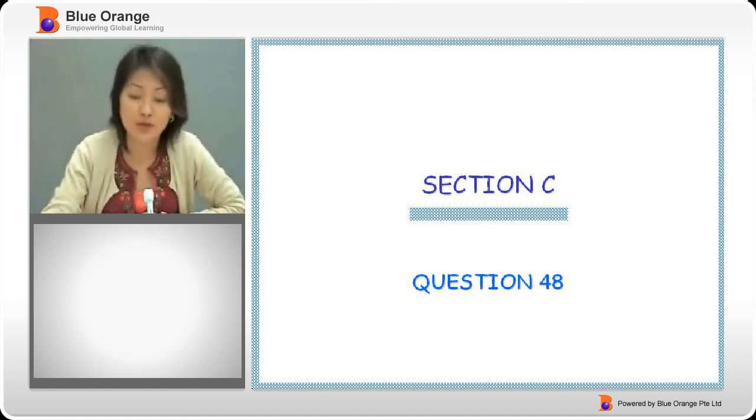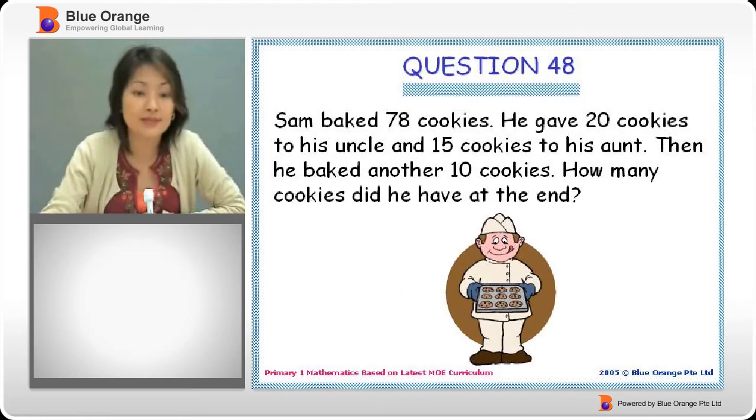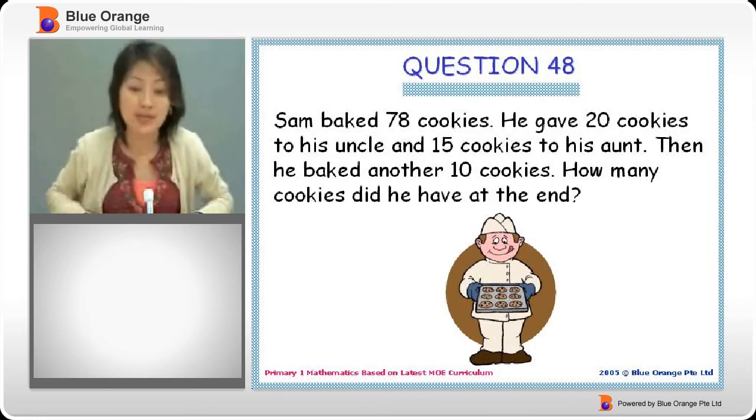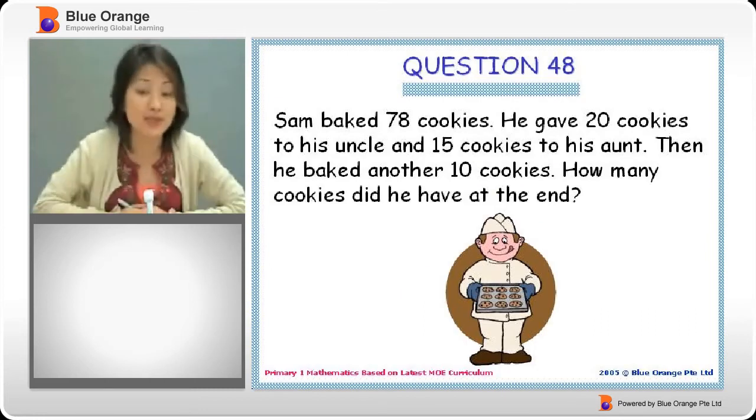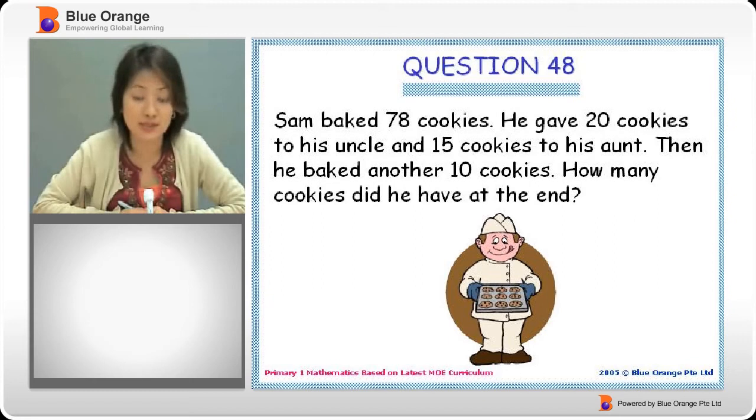Let's now move on to question 48. Sam baked 78 cookies. He gave 20 cookies to his uncle and 15 cookies to his aunt. Then he baked another 10 cookies. How many cookies did he have at the end?